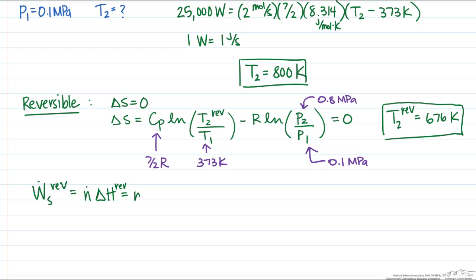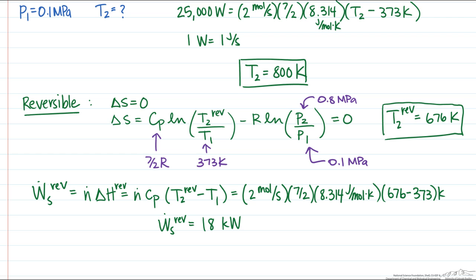And we again used the constant pressure heat capacity times the change in temperature for the reversible compressor. And we find that the reversible work required is 18 kilowatts, which is less than the actual work that was needed.